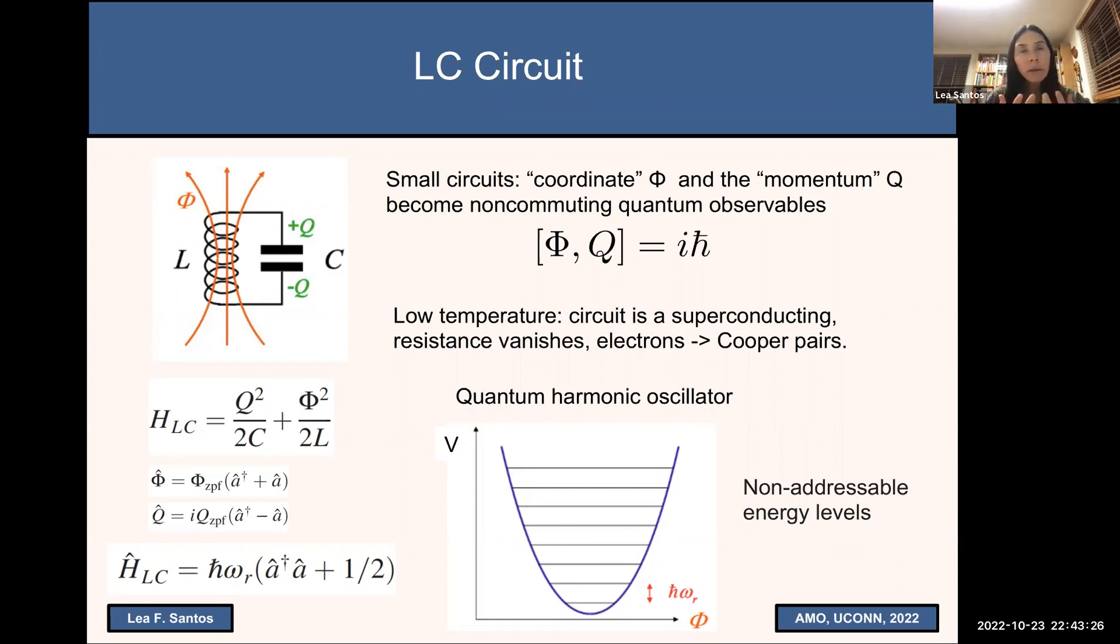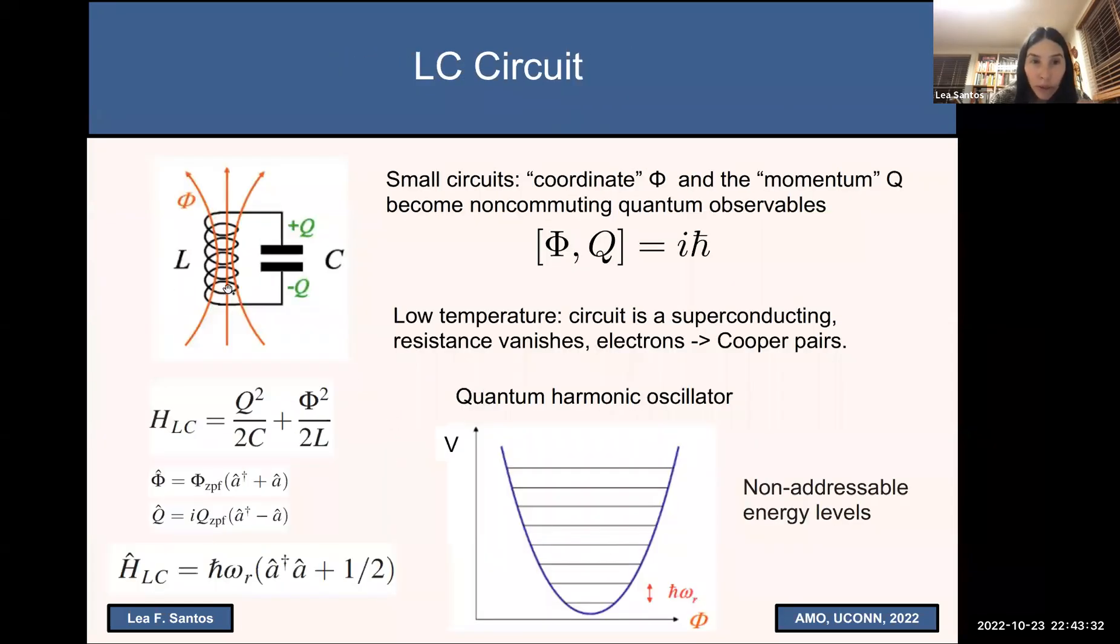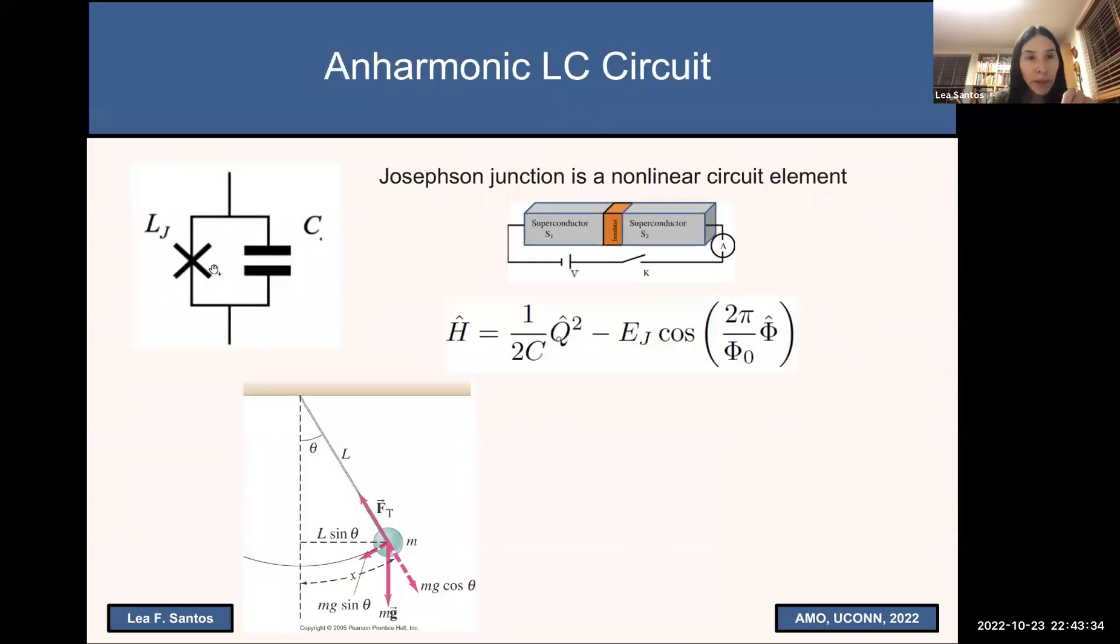To change that, we need to add some nonlinear term to our circuit. So how are we going to do that? We are going to remove the inductor and put in its place a Josephson junction. And what is that? Well, we have two superconductors separated by a thin layer of an insulator. So then the Cooper pair can tunnel.